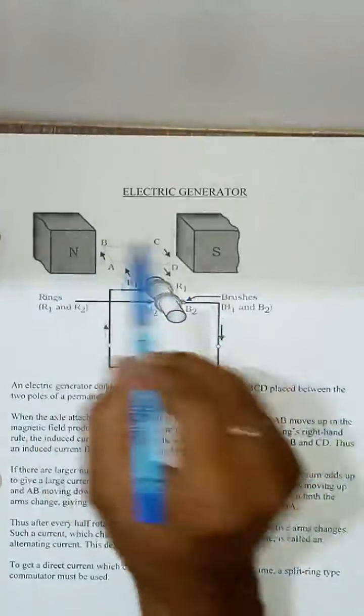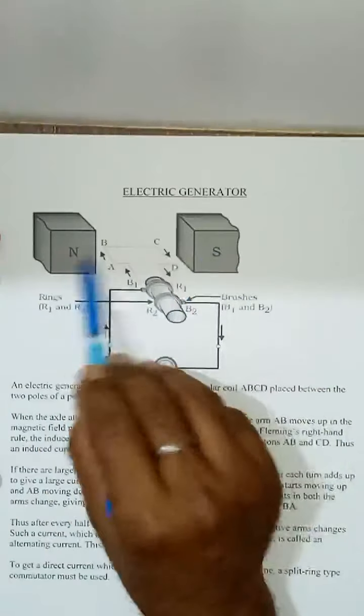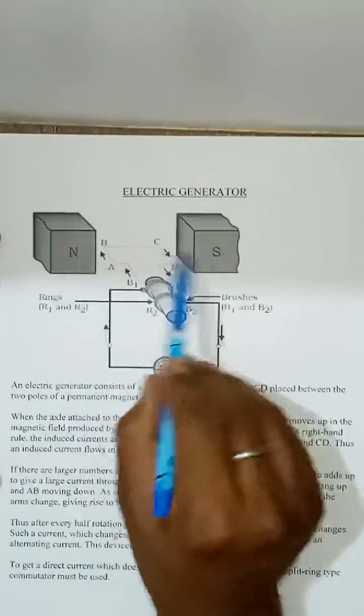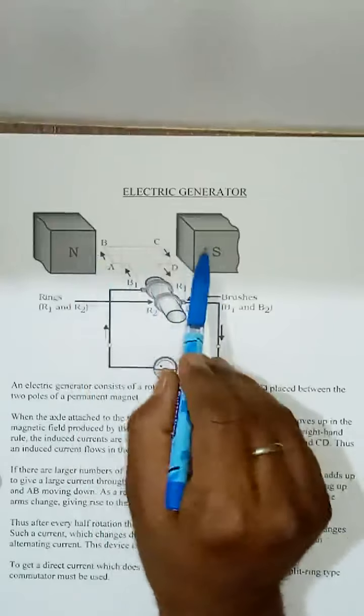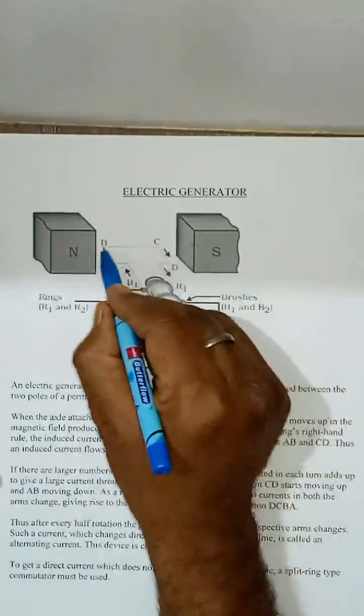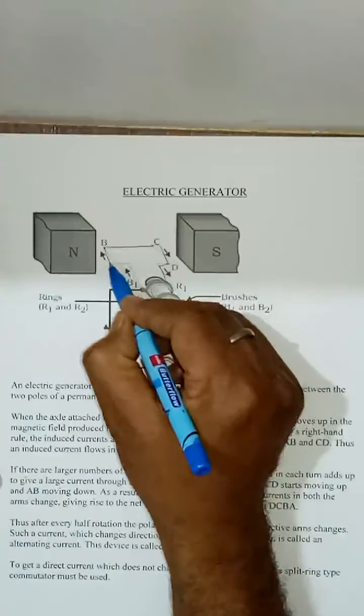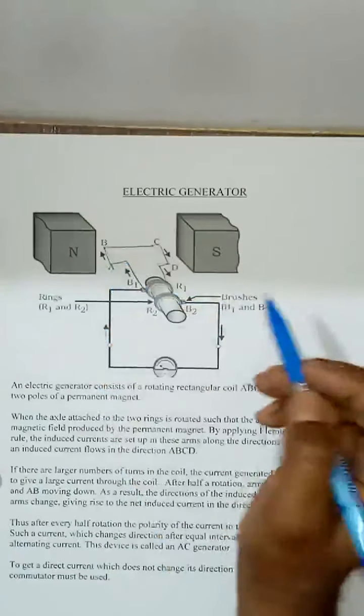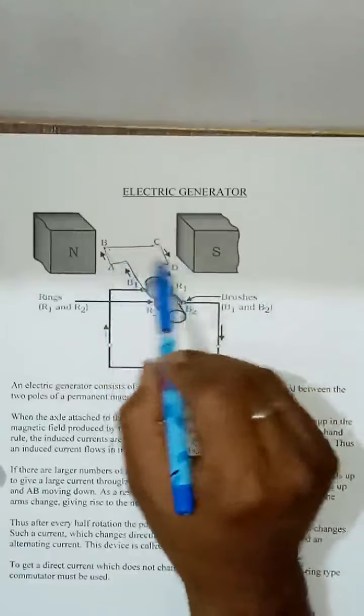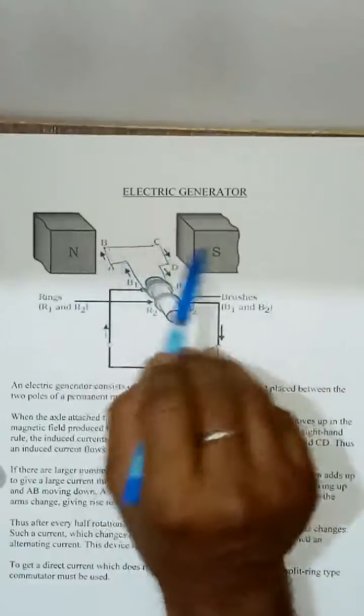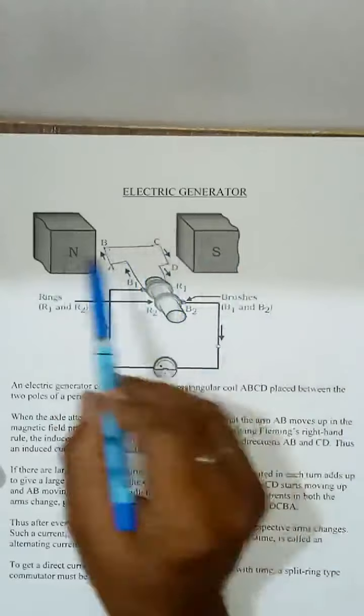There are two magnets as shown here. In between these two pieces of magnet there is a coil. This coil is generally made up of copper. Basically, this coil is being rotated in between these two pieces of magnets.